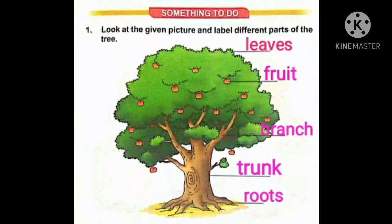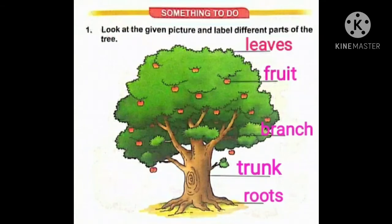Phir niche ki taraf jab hum aate hai, to jo strong stem hota hai tree ka, that is called trunk. The spelling of trunk is T-R-U-N-K. Trunk. Aur sab se niche hota hai, peer ka jad, jisse hum kehte hai roots. R-O-O-T-S. Roots.